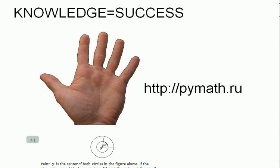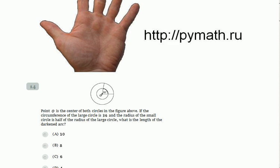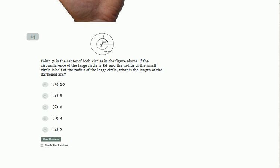Today I want to solve a problem from CAT and let's start our consideration. Point O is the center of both circles in the figure above. If the circumference of the large circle is 36 and the radius of the small circle is half of the radius of the large circle, what is the length of the darkened arc?